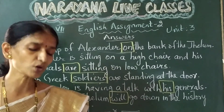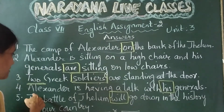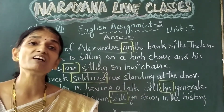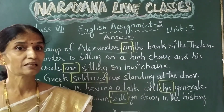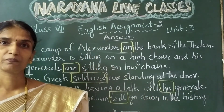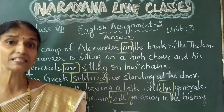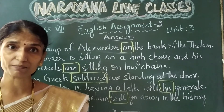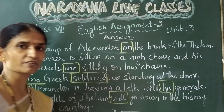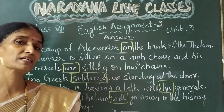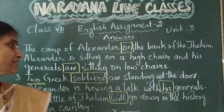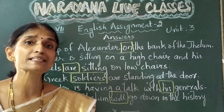Now the fourth sentence: 'Alexander is having a talk with her generals.' The mistake is at the pronoun reference. Alexander is a man — masculine gender — so we should use the appropriate gender pronoun. We replace 'her' with 'his.' The corrected sentence is: 'Alexander is having a talk with his generals.'